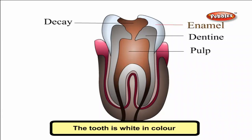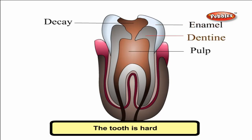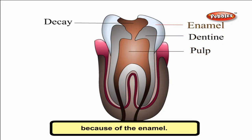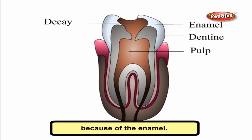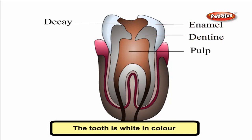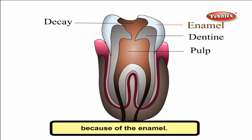Otherwise it will decay. When we eat food, tiny particles of food get stuck on the teeth and also in the space between the teeth. If we don't brush properly, germs breed there. These germs feed on the food and produce acid. The acid destroys the tooth enamel and forms cavities in our teeth. If you do not brush regularly, a sticky colorless layer full of germs and food particles grows on the surface of the teeth. This is called plaque.